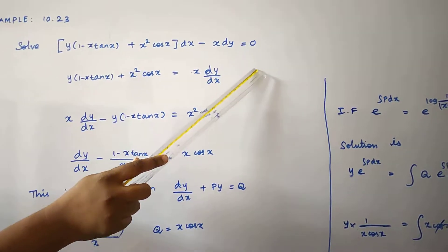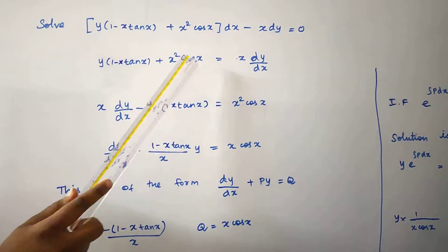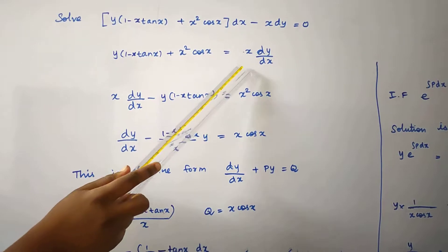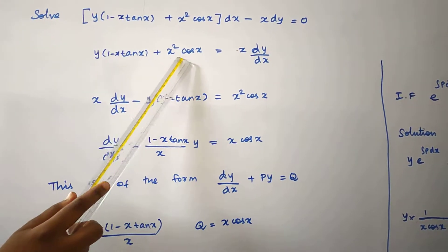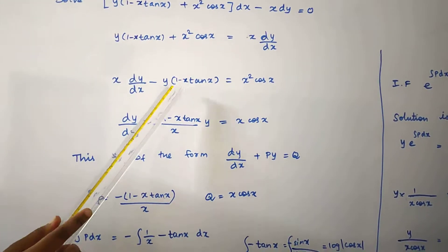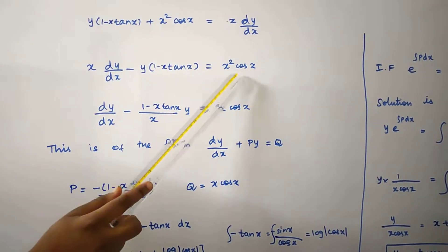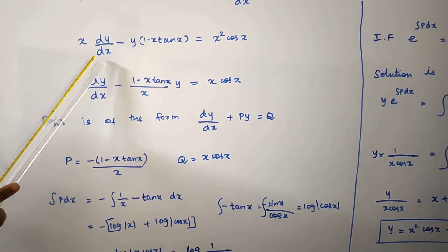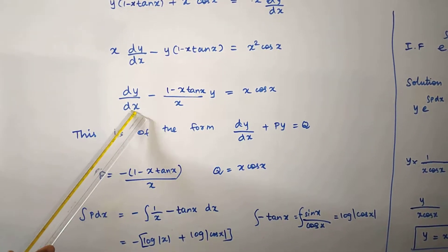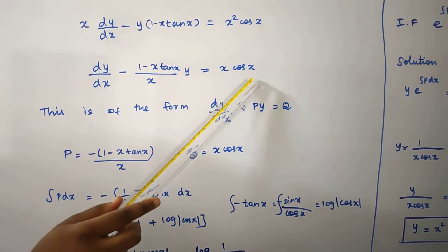Rearranging: minus x·dy equal to 0. Dividing through by dx, we get dy by dx terms. Bringing x·dy to one side, and collecting terms, we obtain: dy by dx minus (1 minus x·tan(x)) by x into y equal to x·cos(x).